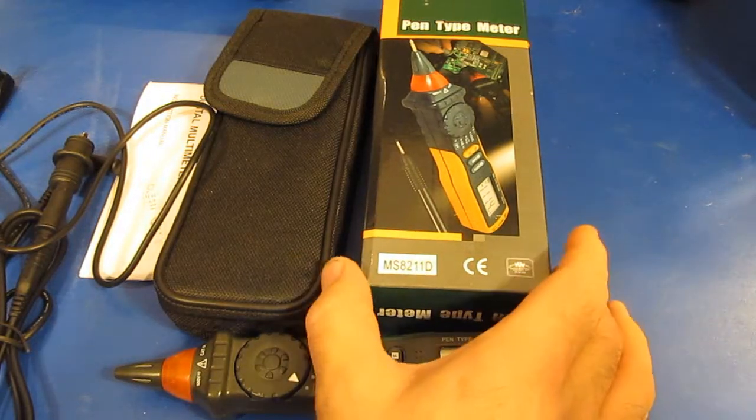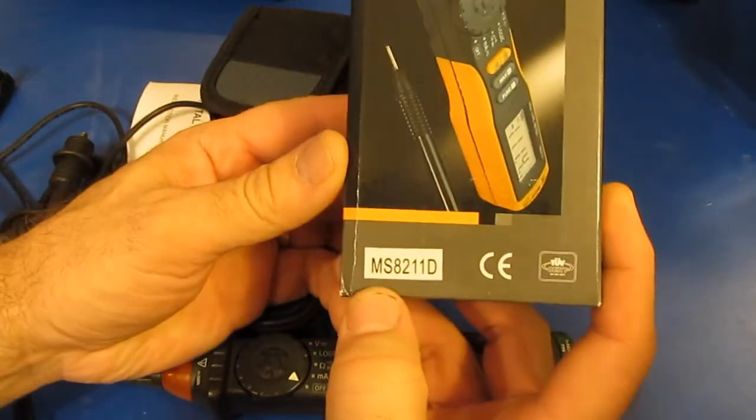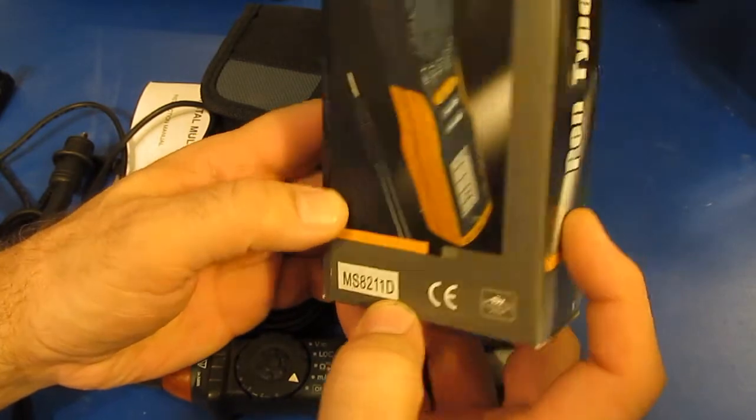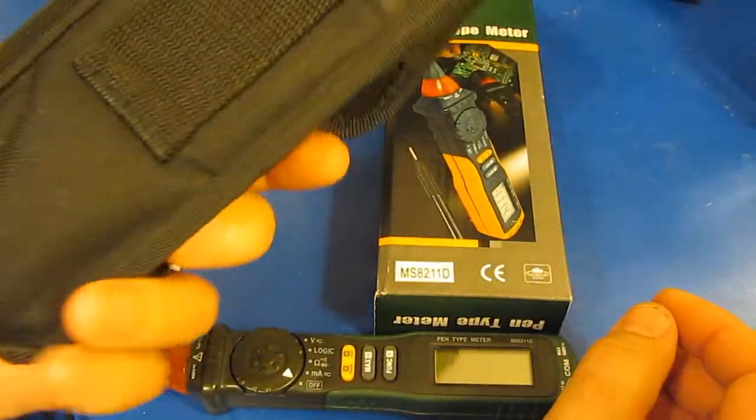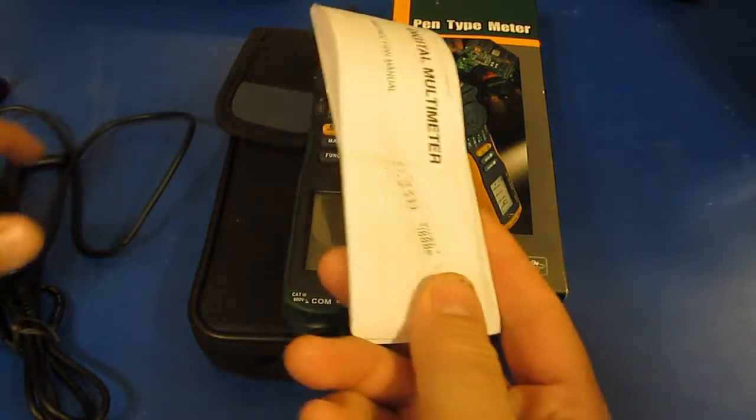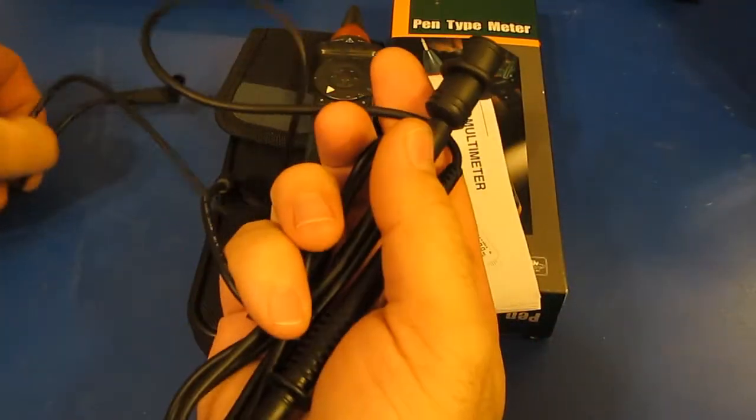Hello again. I've got a new meter we're going to be looking at today. This is a Maztec MS8211D. It comes with a nice little pouch, the probe itself, a manual, and a couple of different probes.